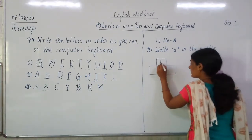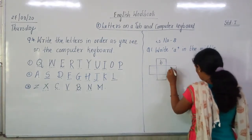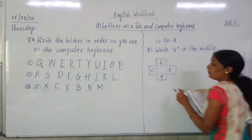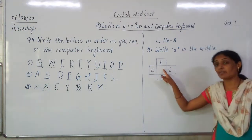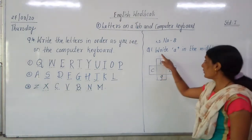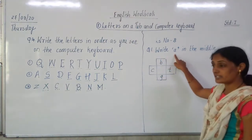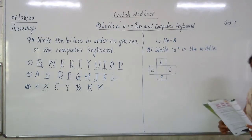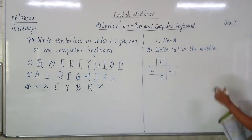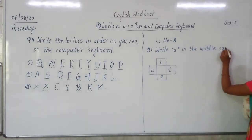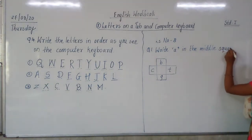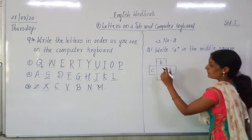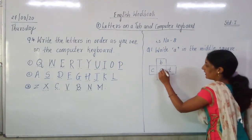There are letters B, T, G, C. What we have to write in the middle square? We have to write down the letter A, because the instruction says: Write A in the middle square. Which is the middle square? The square which is in the center is called the middle square. We have to write down the letter A.